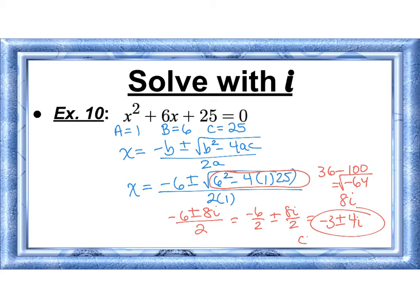That's called a complex number. It has a real part negative 3 and imaginary part 4i.